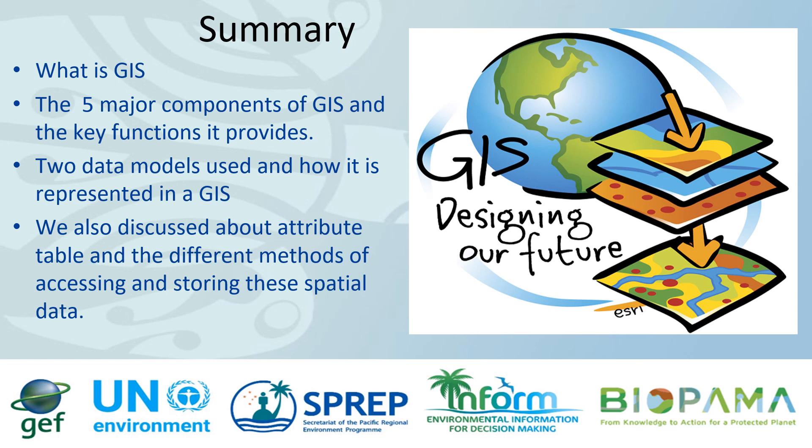In summary, in the first module we learned about what a GIS is, the five key components of a GIS and the key functions they perform. We also learned about the two major data models used and how they are represented in a GIS, as well as the attribute table and the different methods of accessing and storing spatial data.